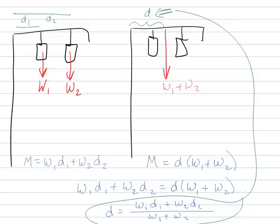There are all these problems where you're trying to simplify these issues. At the end of the day, I want to have the exact same moment and the exact same net force that I had before. I can move the force as long as I account for the fact that moving it may induce a moment that I need to then correct for.